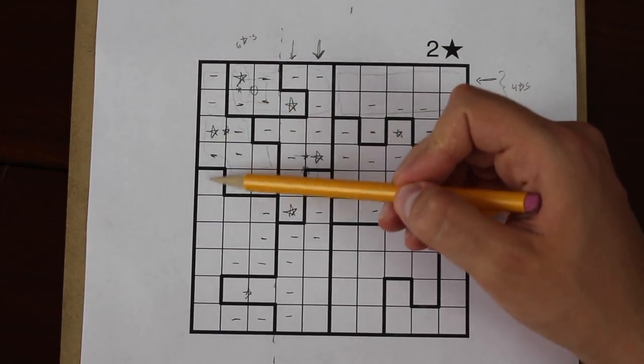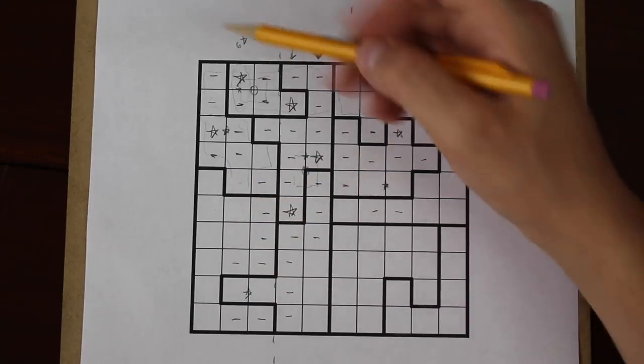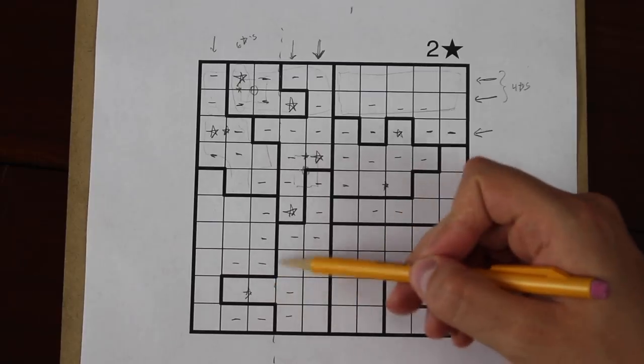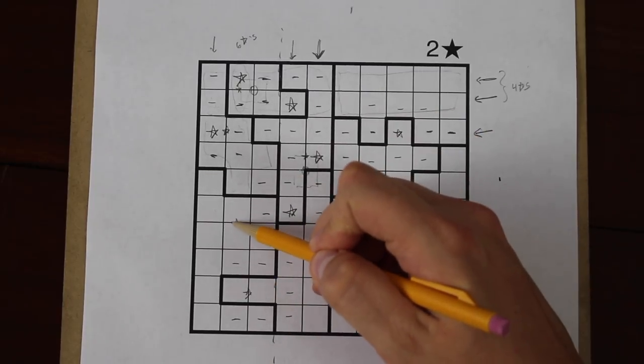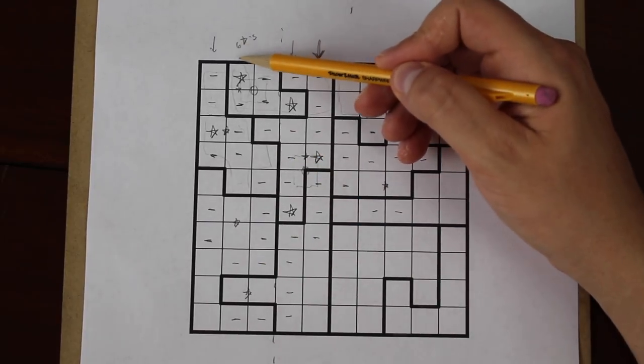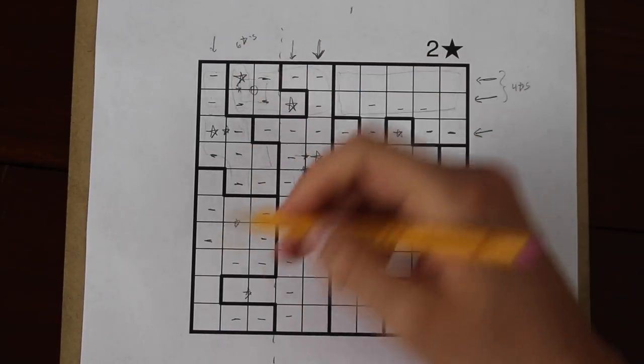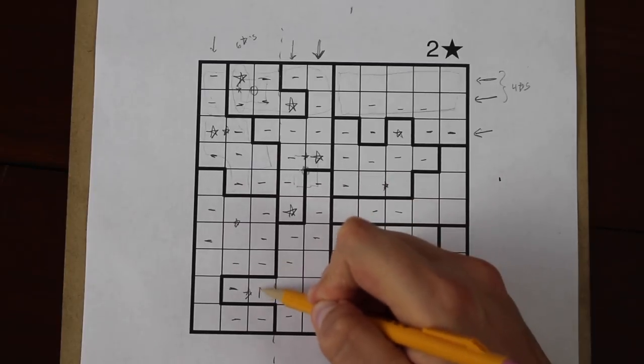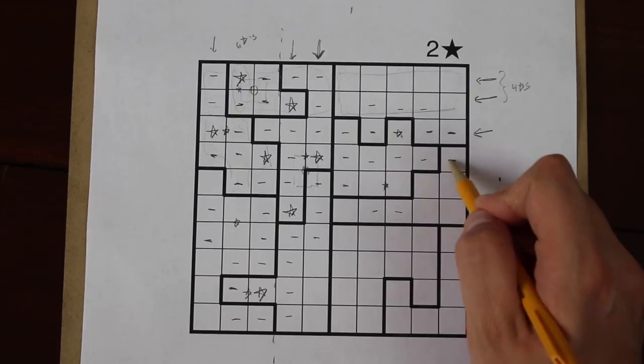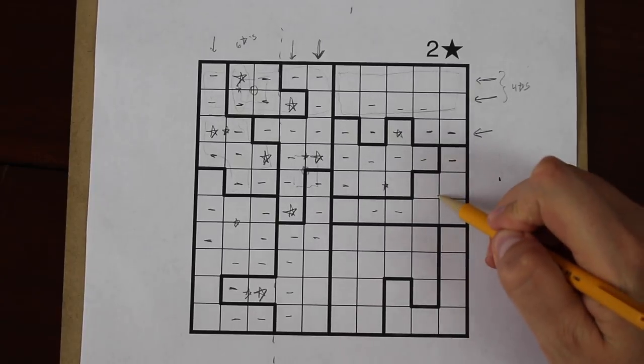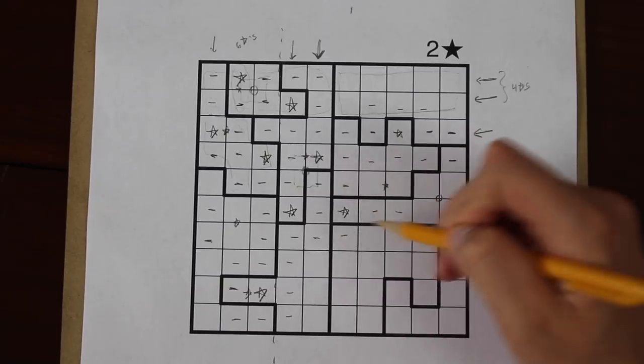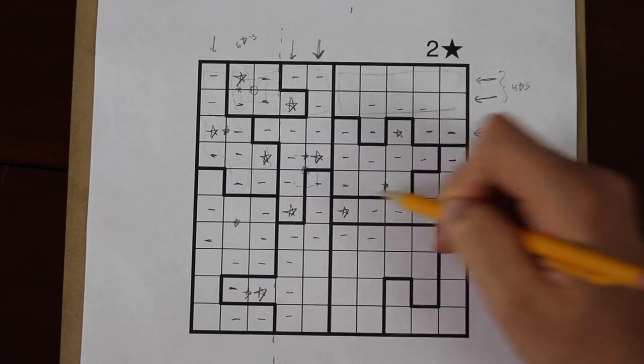Now there can only be one more star in this column, in the first column, which means that in this big region where we have to place two stars, one must go in one of these two squares. Now we have two stars in the second column, so that eliminates even more choices. We have two stars here, so we can block off this square. Now only one star can fit here, so one must go there. And the puzzle is starting to fall apart.